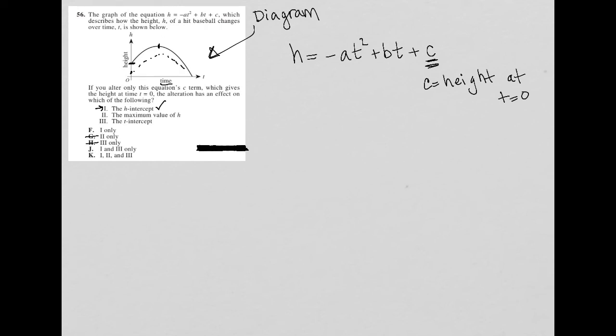If I started that, if I move my h-intercept up here, the height would be higher as well. So I'm going to say yes to the maximum value of h is changed. So that gets rid of f and j, telling me that k must be the right answer, but let's just make sure I did not make any mistakes.